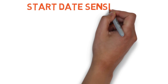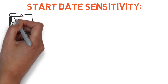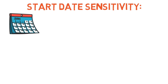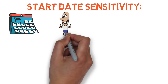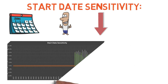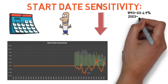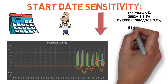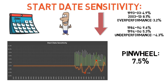Start date sensitivity looks at the rolling returns of the 10 years prior to each initial investment date and compares them to the following 10 years to see how big a difference there is — a good way to assess how dependable returns have been historically. The Pinwheel Portfolio had a total start date sensitivity of 7.5%. The largest overperformance was 3.2% from 2003 to 2013, with a return of 8.1% per year versus 4.9% from 1993 to 2003. The largest underperformance was negative 4.3% when returns from 1994 to 2004 failed to match those from 1984 to 1994.